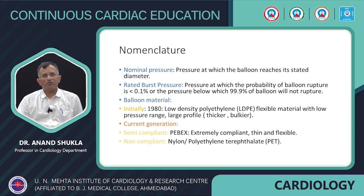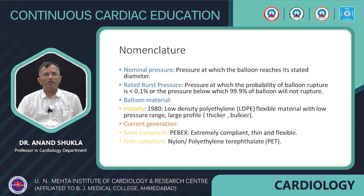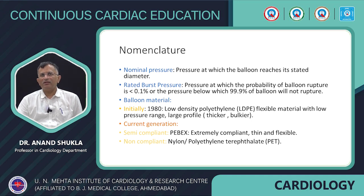There are certain nomenclatures: nominal pressure is the pressure at which the balloon reaches its stated diameter. Rated burst pressure (RBP) is the pressure at which the probability of balloon rupture is less than 0.1%, or the pressure below which 99.9% of similar balloons will not rupture.